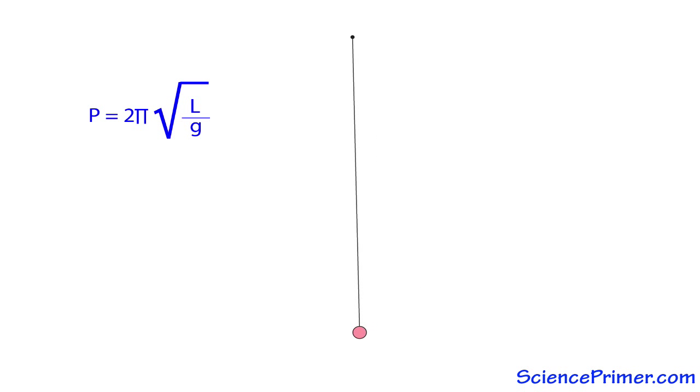This is a very useful equation because by rearranging it, any two of these parameters, length and gravity, gravity and period, or length and period, can be used to estimate the third parameter.